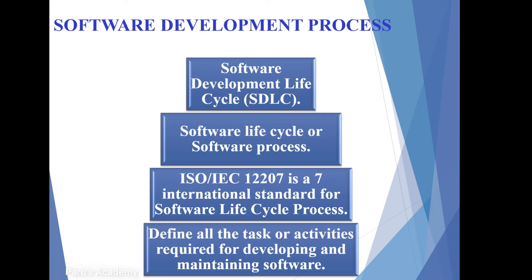We can also call it software life cycle or software process. ISO IEC 12207 is an international standard for software life cycle process. It is a seven international standard for software life cycle.